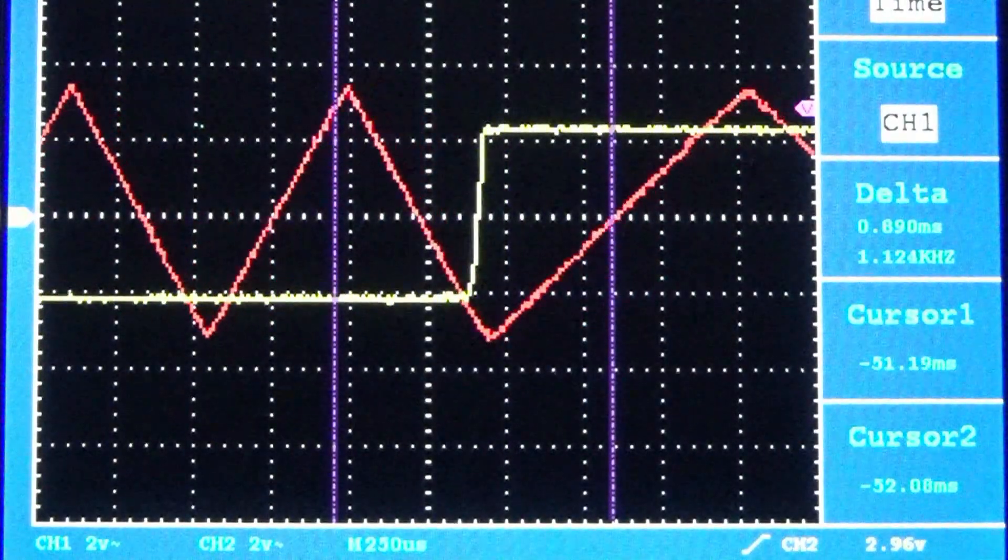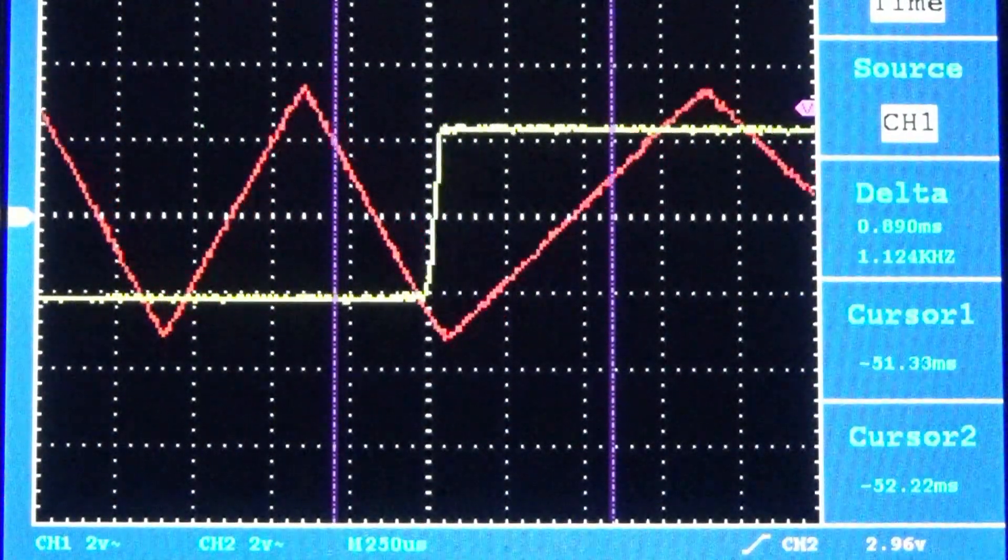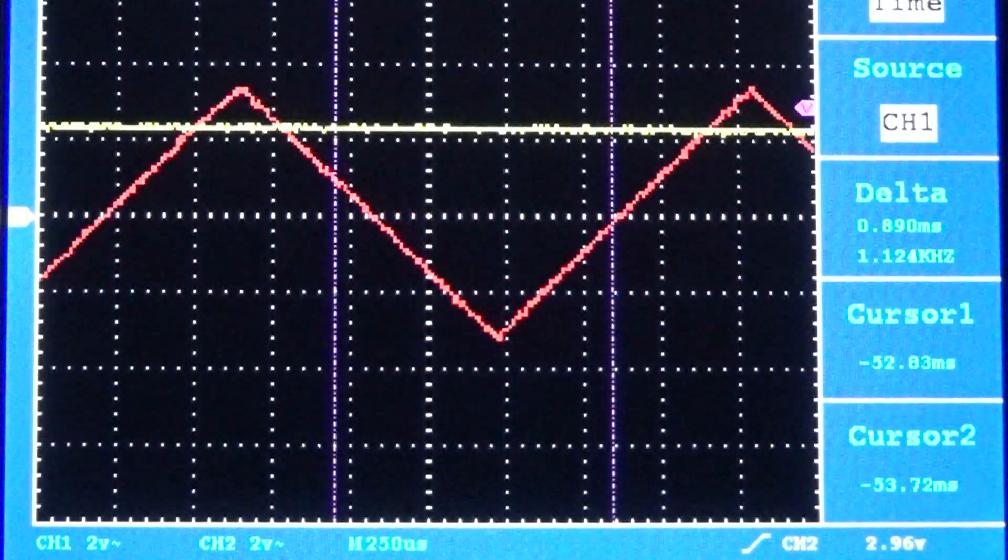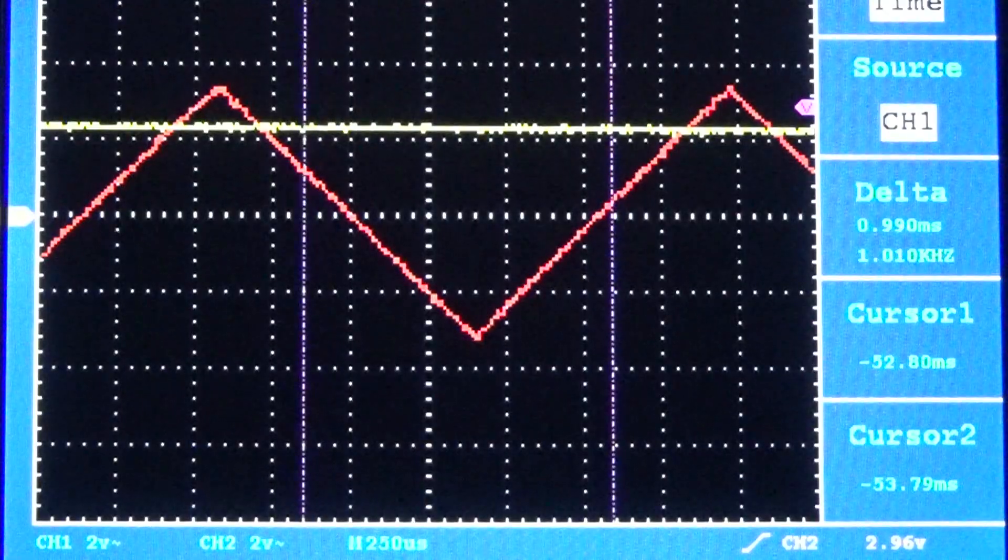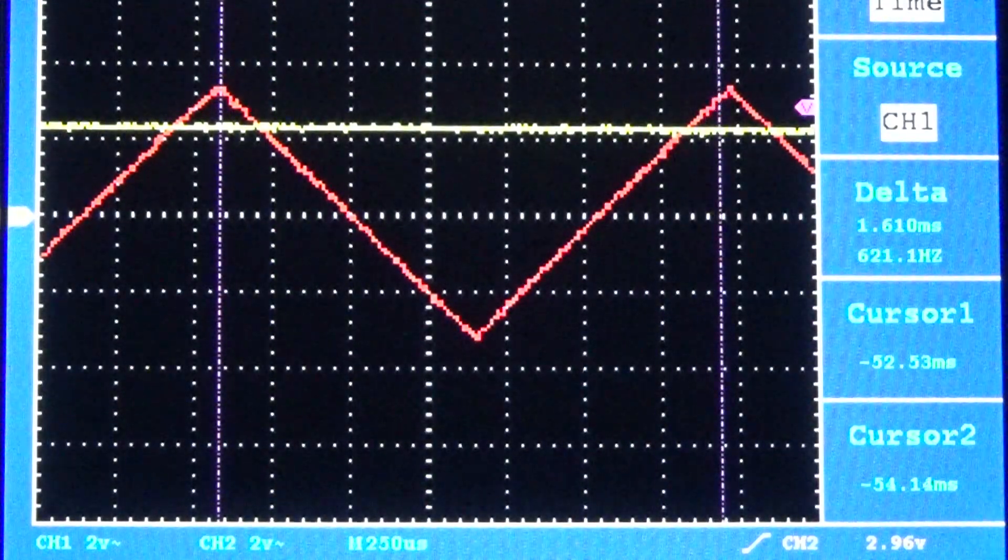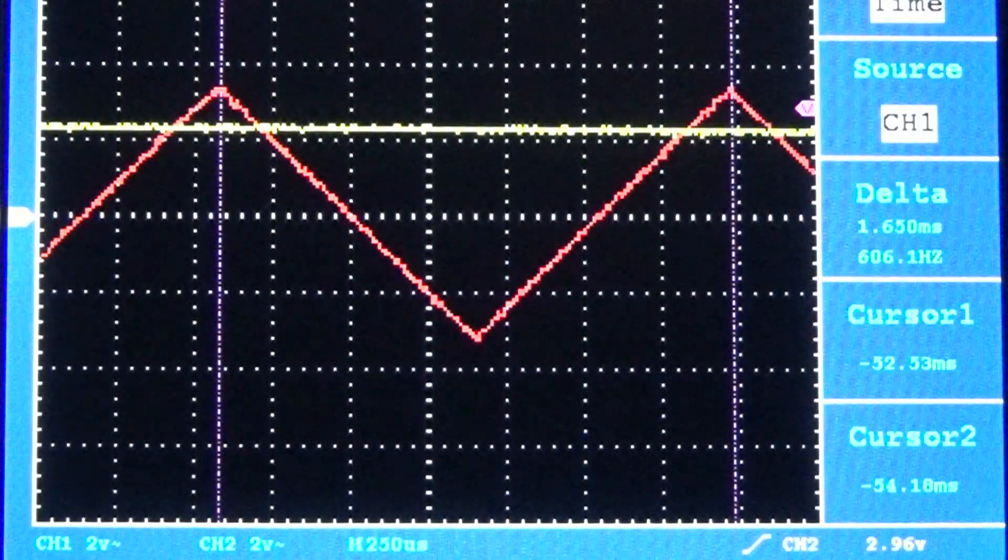Now, when the message signal goes from low to high, we see that there is a change in output frequency. The frequency decreases as the signal goes high. The resulting output frequency now, when the message signal is high, is about 606 Hz. And this value is stable across that maximum.